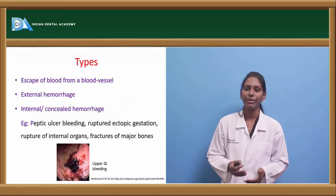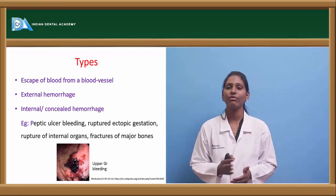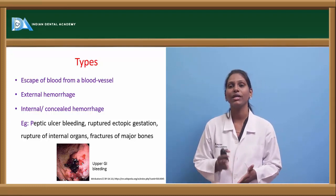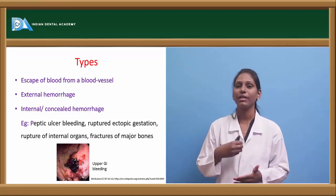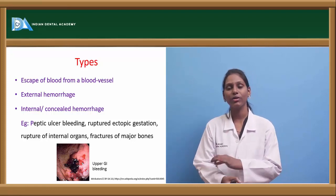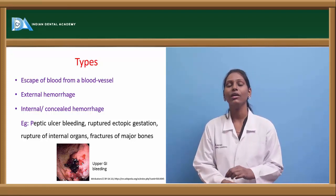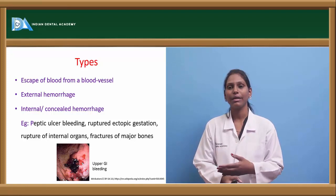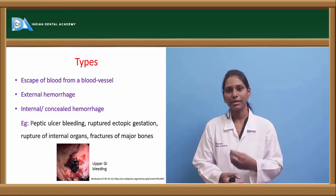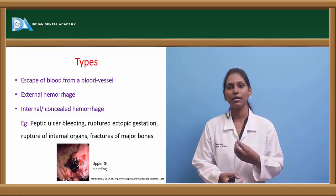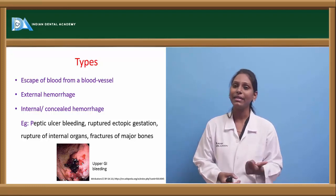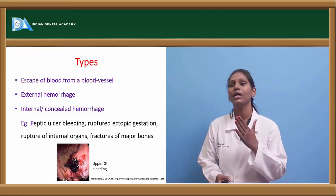Hemorrhage is of two types: external hemorrhage and internal hemorrhage. External hemorrhage is something we can actually see — either through a bruise, through an injury, or through a wound. Internal injury can also cause hemorrhage, and this is called internal hemorrhage or concealed hemorrhage.